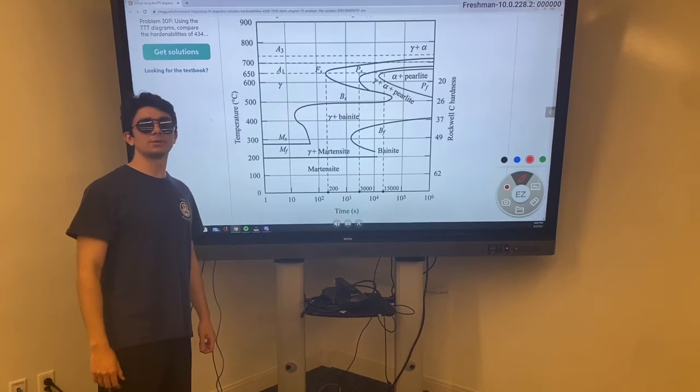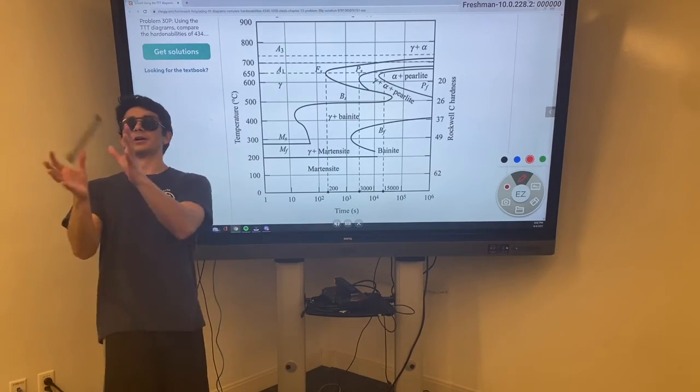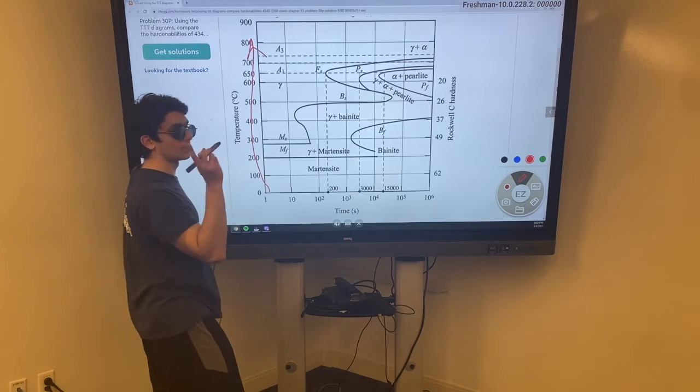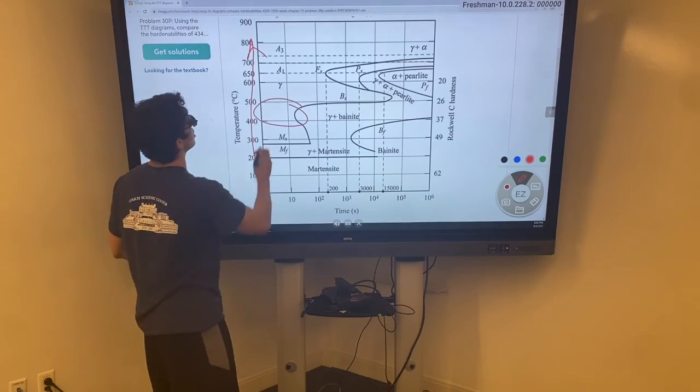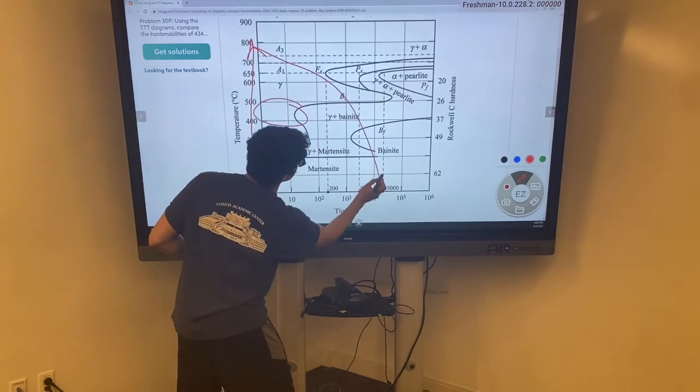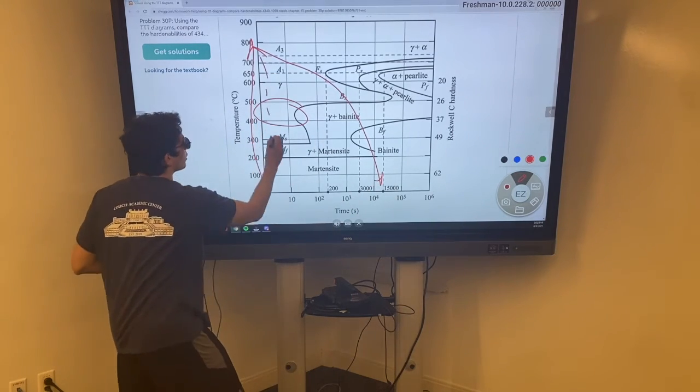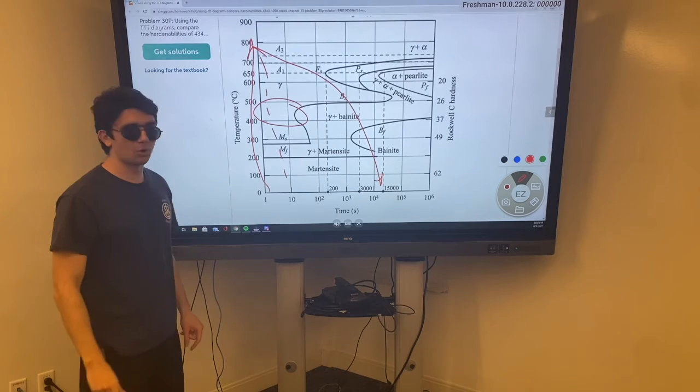So, how do we avoid the martensite? Well, I'm here to show you. Boom! Austenitize for the third time. Name of the game? Avoid the nose. We want it to cool like that, forming bainite or some other microstructure before we go down there and form martensite.